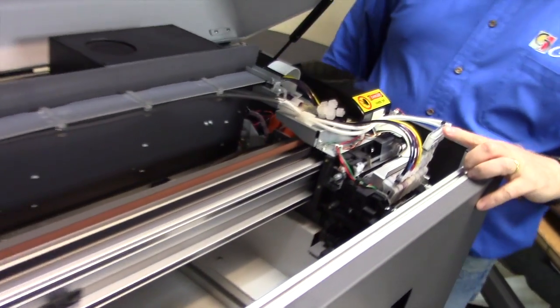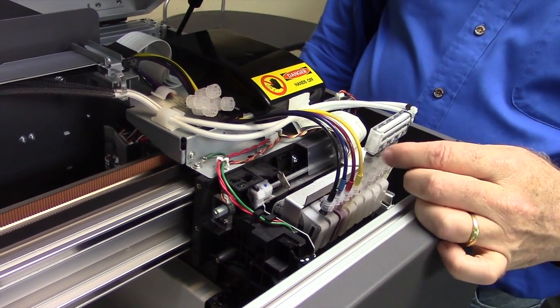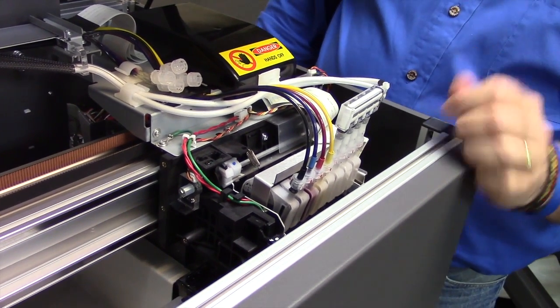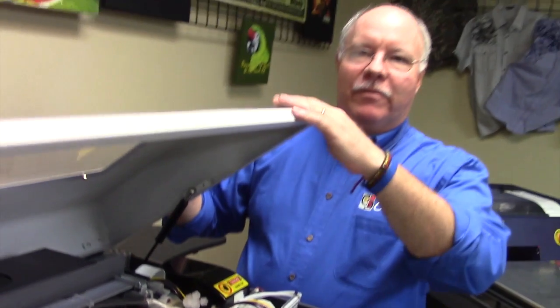The manifold is over top of my four white channels of white ink. You're going to see that the ink comes in, whatever is used goes down to the dampers, the rest is returned right back to the WIMS system in the back where it started off.